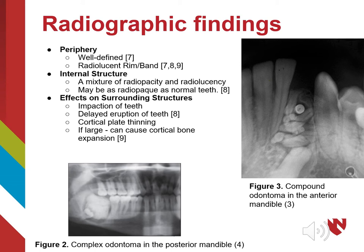The best means for diagnosing an odontoma is either by pantomograph or cone beam CT. Upon diagnosing an odontoma, a dental professional will look at the patient's radiograph for a well-defined border with a radiolucent rim at the periphery. The internal structure will have a mixture of radiopacity and radiolucency, and the radiopacity may be as much as the adjacent teeth.